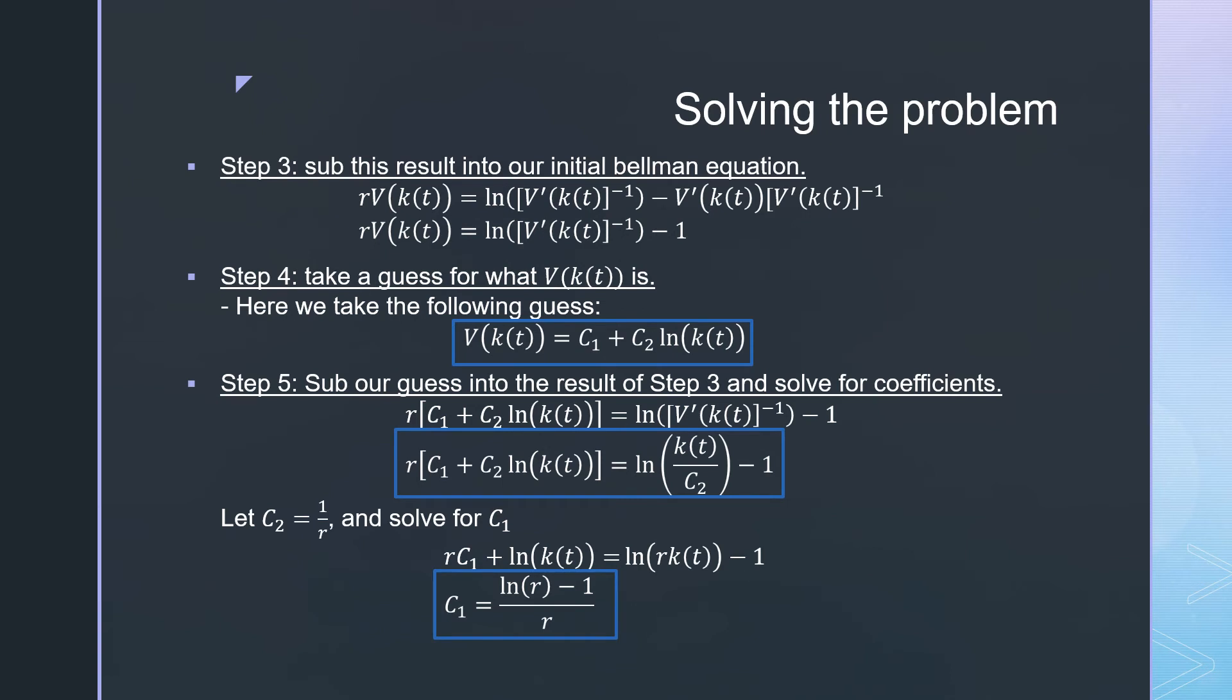Step three is substituting this result into our initial Bellman equation. We plug in this inverse of the derivative of V(kt) wherever we see it and we get a simpler result.